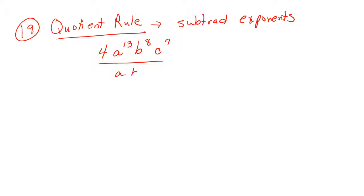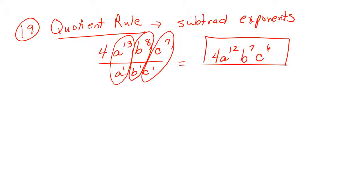Question 19 asks you to use the quotient rule for exponents. The quotient rule says you are to subtract your exponents. We have 4a to the 13th b to the 8th c to the 7th all over abc. The abc at the bottom are assumed to be powers of 1. When we simplify, we will have a 4. Then 13 minus 1 is 12, so a to the 12. 8 minus 1 is 7, b to the 7th. 7 minus 1 is 6, c to the 6th. So that would be my final answer.